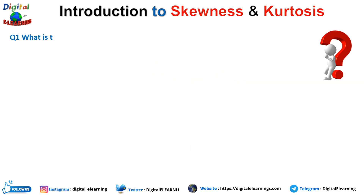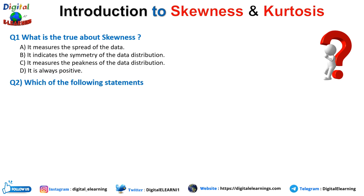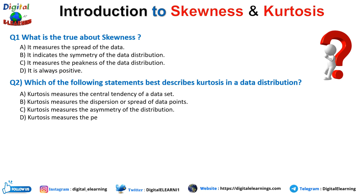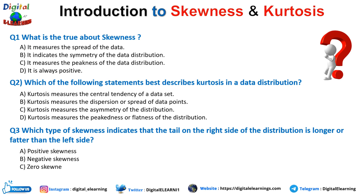First question: What is true about skewness? A. It measures the spread of data. B. It indicates the symmetry of a data distribution. C. It measures the peakness of a data distribution. D. It is always positive. Second question: Which of the following statements best describes kurtosis in a data distribution? A. Kurtosis measures the central tendency of a data set. B. Kurtosis measures the dispersion or spread of data points. C. Kurtosis measures the asymmetry of a distribution. D. Kurtosis measures the peakness or flatness of a distribution. Third question: Which type of skewness indicates that the tail on the right side of the distribution is longer or flatter than the left side? Positive skewness, negative skewness, zero skewness, or none of the above? You can leave all your answers in the comment section below.